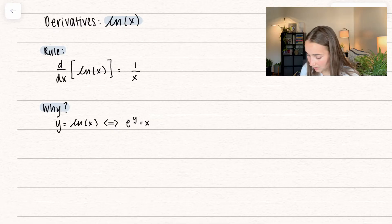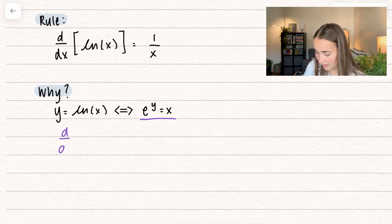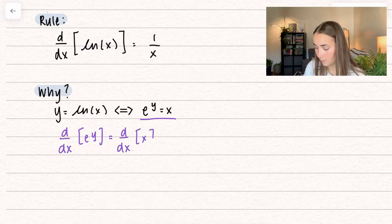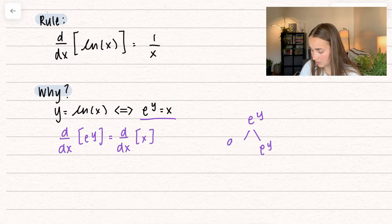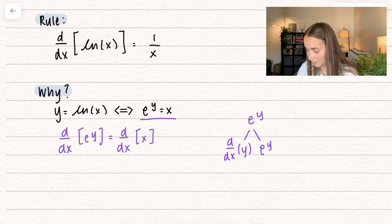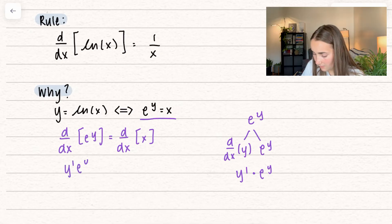What we're going to do is use implicit differentiation on this. I'm going to go ahead and take the derivative of both sides in terms of x. If we remember how to take the derivative of e to the power of y, first we drop it down, but we need to multiply it by the derivative of y — d/dx of the exponent. We can't take the derivative of y in terms of x, which means we just leave it as y prime. We multiply that by e to the power of y. So I get y prime times e to the power of y is equal to the derivative of x, which is just 1.